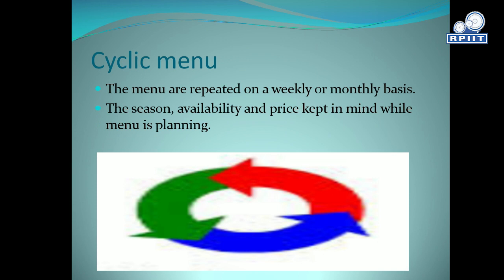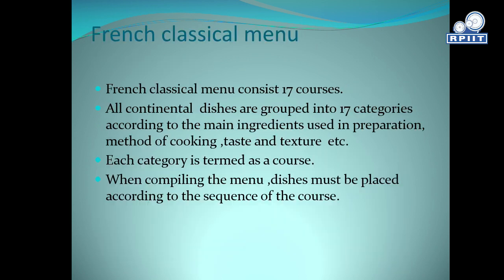French Classical menu. The French Classical menu consists of 17 courses. All continental dishes are grouped into 17 categories according to the main ingredient used in preparation, method of cooking, taste, and texture. Each category is termed as a course. When compiling the menu, dishes must be placed according to the sequence of the course.